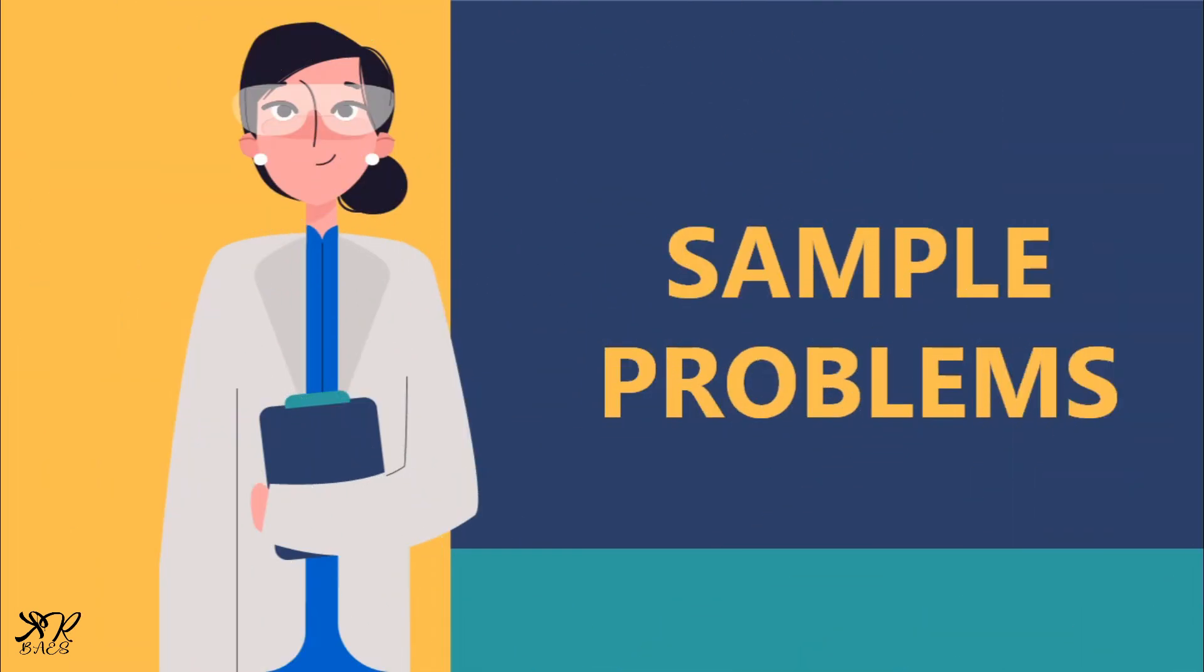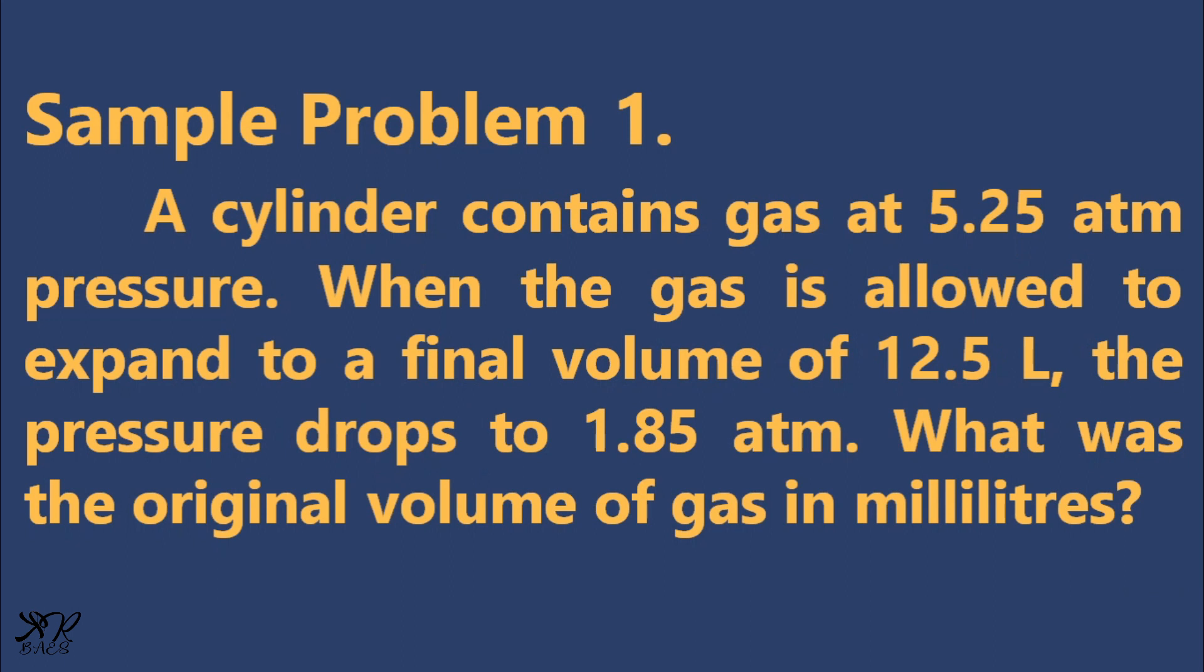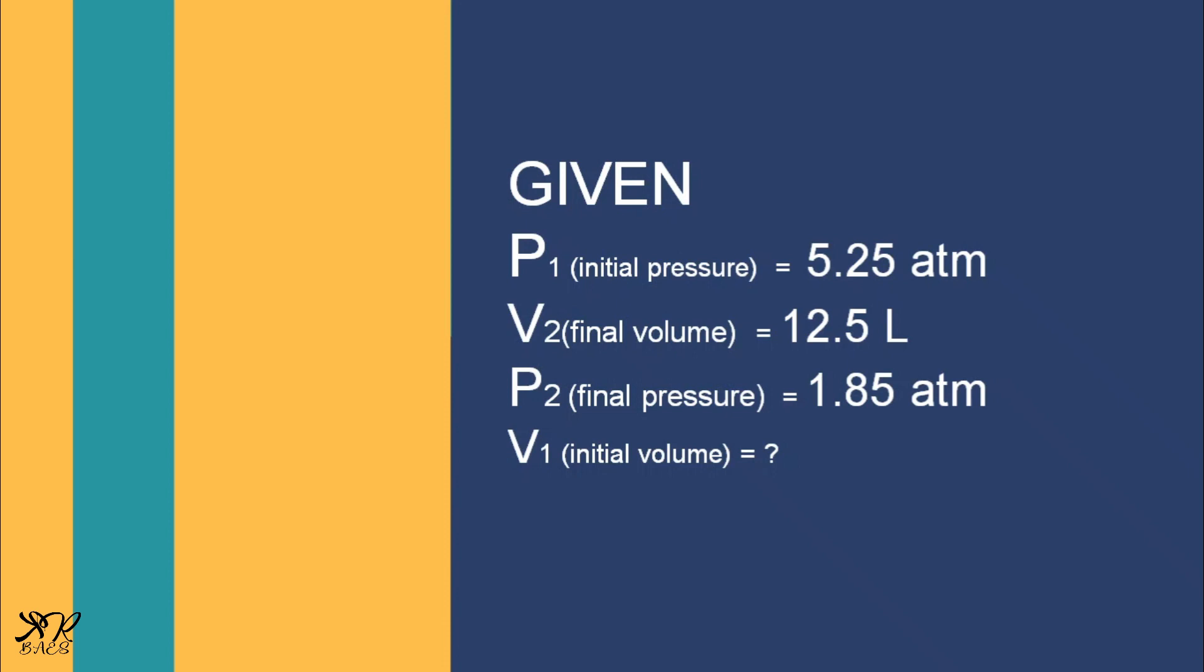Now that we already know the principles of Boyle's law, we can now proceed with the practice exercises. For sample problem number 1, a cylinder contains gas at 5.25 atmosphere pressure. When the gas is allowed to expand to a final volume of 12.5 liters, the pressure drops to 1.85 atmosphere. What was the original volume of gas in milliliters? So these are the given: P1 is equal to 5.25 atmosphere, V2 is equal to 12.5 liters, P2 is equal to 1.85 atmosphere. And we are looking for the initial volume.